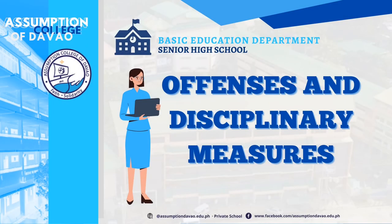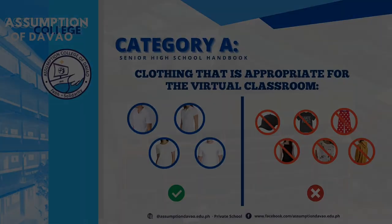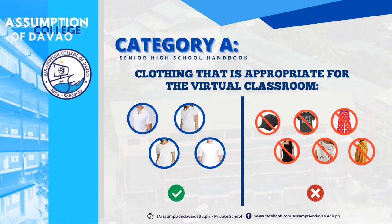Offenses and Disciplinary Measures. In addition to the existing guidelines, we identify possible offenses and disciplinary measures appropriate for the new normal setup and categorize them depending on the gravity of the offense. For Category A: Not Dressed Properly for Class. Wearing of hats, shirts with offensive logos or messages, sleeveless dresses or shirts, ripped or torn clothing, pajamas, and sweatshirts are inappropriate.